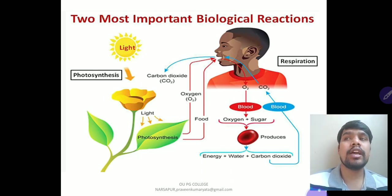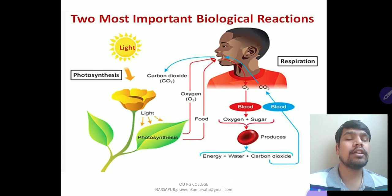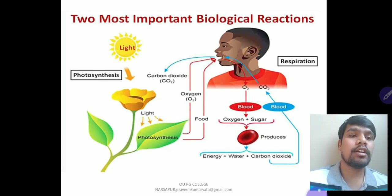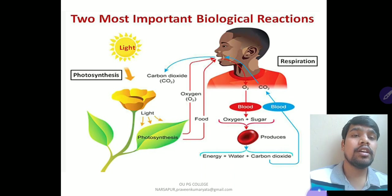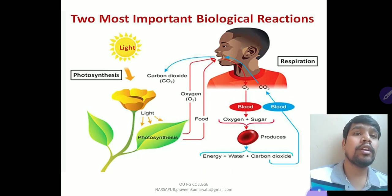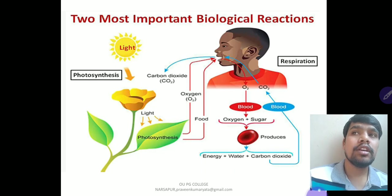Photosynthesis occurs in plants and respiration occurs in animals and humans. In respiration, we inhale oxygen, which is used to burn sugar, releasing energy, water, and carbon dioxide — which we exhale through the blood. In photosynthesis, chlorophyll (the green pigment) absorbs light and water to produce food and oxygen, absorbing carbon dioxide and releasing oxygen and food. These are the two basic and important biological reactions.